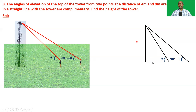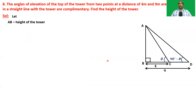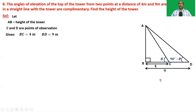This is the figure with lines A, B, C, D, where BC is four meters and BD is nine meters. Let AB be the height of the tower. C and D are points of observation. Given angle ACB is theta, BC is equal to four and BD is equal to nine meters.